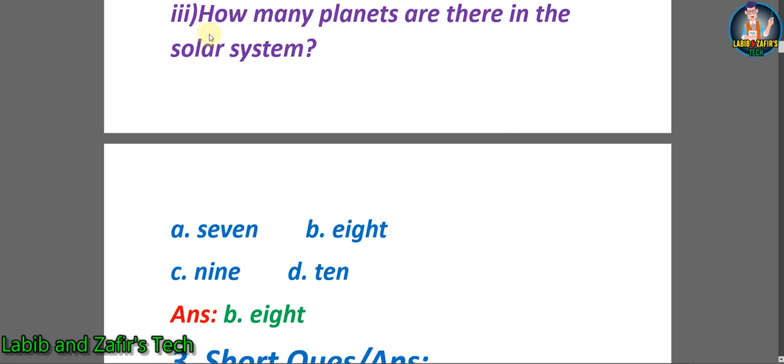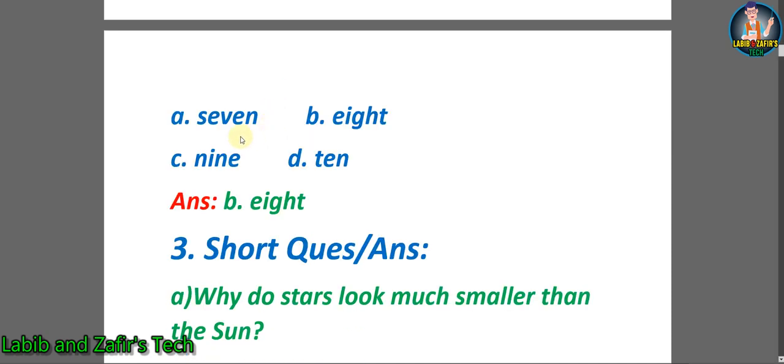Number three: How many planets are there in the solar system? A. 7, B. 8, C. 9, D. 10. The correct answer is B. 8.